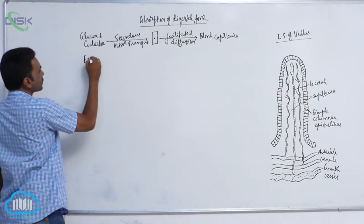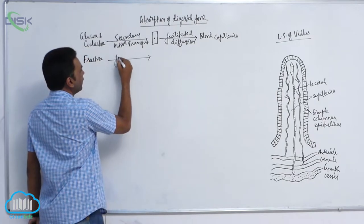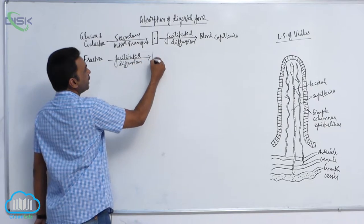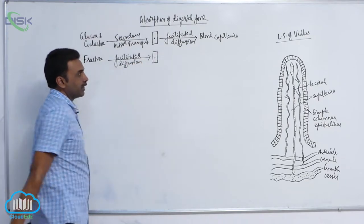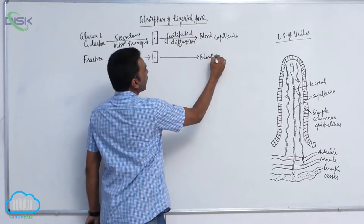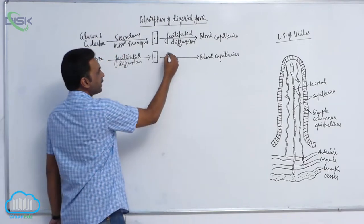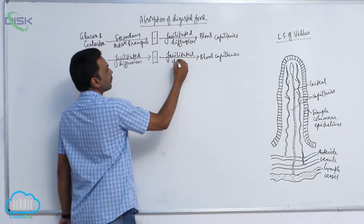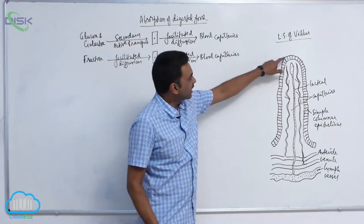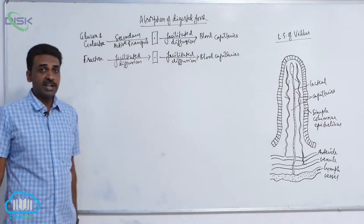Fructose enters into the epithelial cell by facilitated diffusion, and from the epithelial cells it again enters into blood capillaries also by facilitated diffusion only.